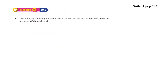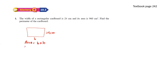Mastery Q 10.3. The width of a rectangular cardboard is 24 cm and its area is 960 cm squared. Find the perimeter of the cardboard. Let's draw the cardboard. The width is 24 cm and we don't know the length, so let's name it B. Since we know the area, let's find B. Area equals base times height, so 960 equals B times 24, which gives B equals 960 divided by 24, so the base is 40 cm.